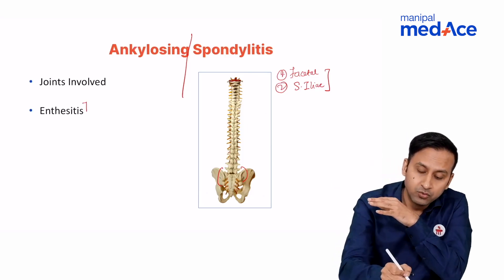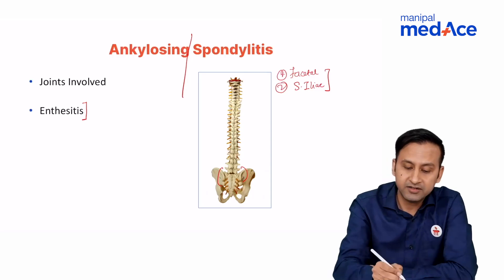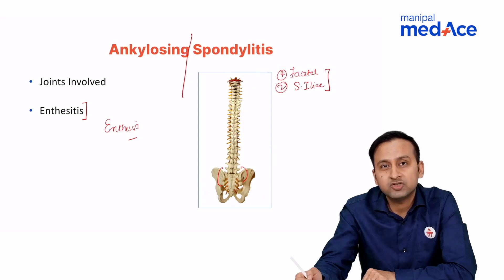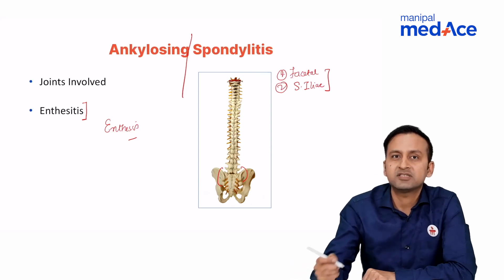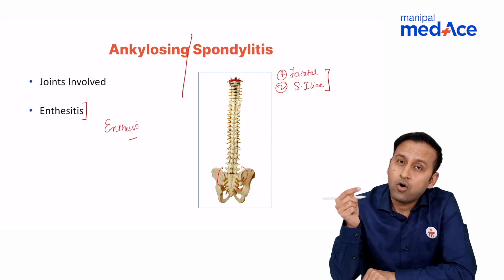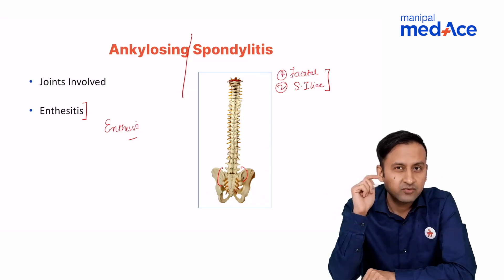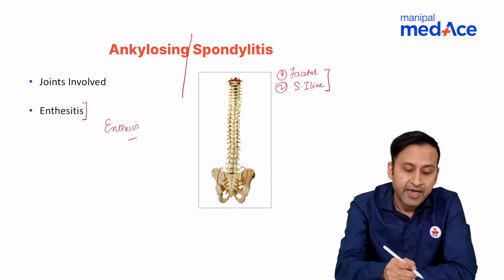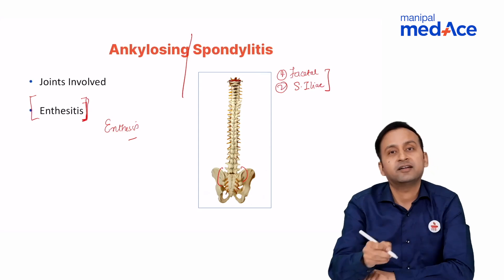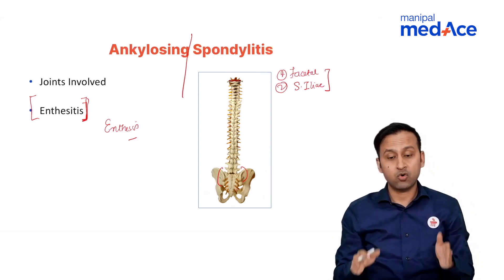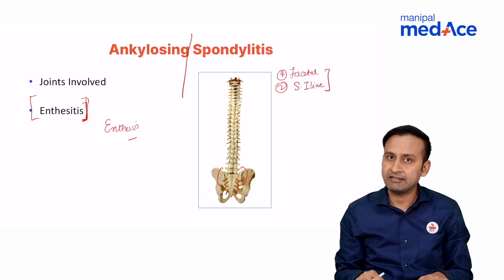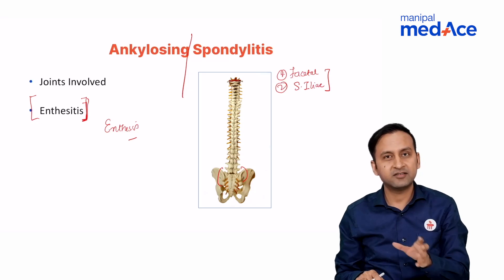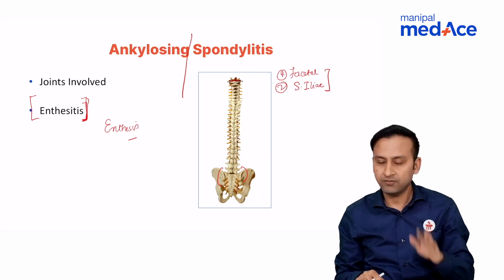A new term is enthesitis. The enthesis is the area where a bone is joined by a ligament or tendon — where a tendon or ligament attaches to a bone. Inflammation of that area is called enthesitis. Ankylosing spondylitis is essentially an enthesitis, and all its manifestations depend upon this concept. The most common joint involved is the sacroiliac joint.